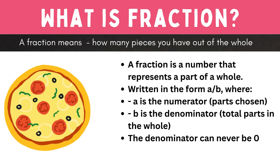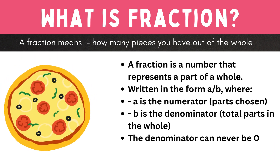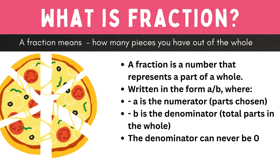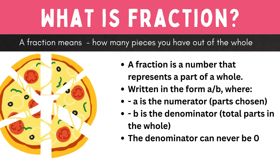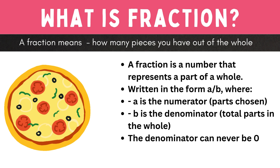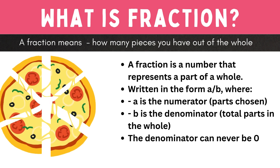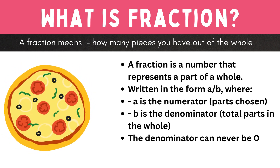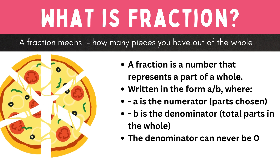What does the top and bottom mean? We write a fraction like A over B, like one eighth. The top number A tells us how many pieces you have — we call it the numerator. The bottom number B tells us how many pieces the whole thing — cake in this instance — is cut into. We call it the denominator.